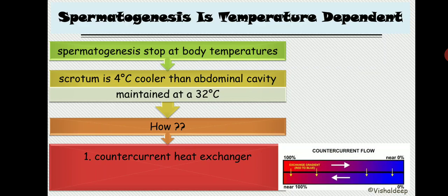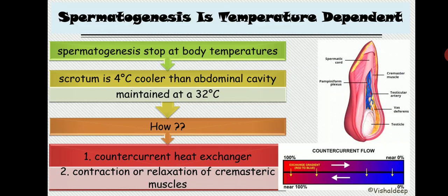Situations that increase heat around the testes — for example, a hot bath or wearing an athletic supporter that sticks the scrotum close to the abdominal cavity — will reduce sperm count, in some cases by up to 90%. The second mechanism responsible for temperature control is contraction and relaxation of the cremaster muscle. If the temperature decreases below 32 degrees, the cremaster muscle contracts and brings the scrotum near the body. If the temperature is higher, the cremaster muscle relaxes and lets the testes move away from the body.